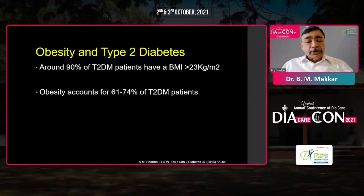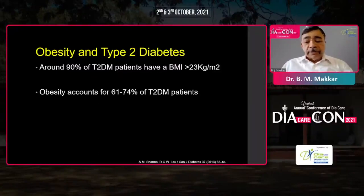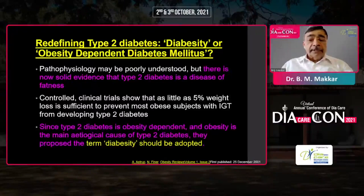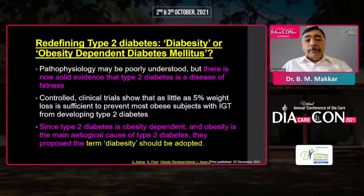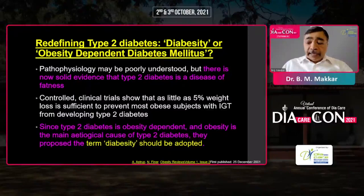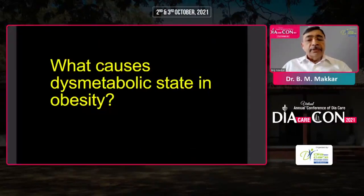Studies have clearly shown that 90% of type 2 diabetes patients have higher BMI, and obesity accounts for almost three quarters of type 2 diabetes patients. To the extent that way back in 2000, it was proposed to redefine obesity-type 2 diabetes as obesity-dependent diabetes mellitus by Nick Finer and Arnie Astrup, but this was somehow not finally accepted.